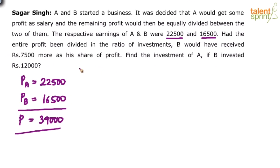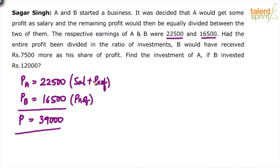In case one, profit of A is salary of A plus his share of the remaining profit, while profit of B is just his equal share — he gets no salary. In case two, the total profit of 39,000 is divided in the ratio of their investments, and B would have received 7,500 more as his share of profit.